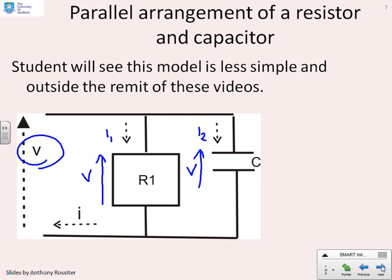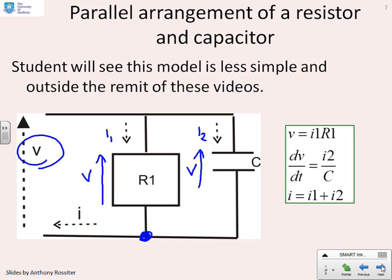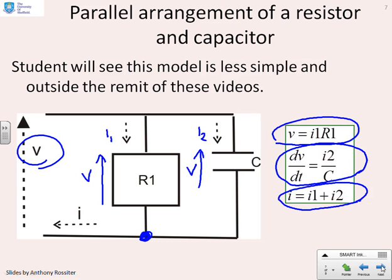What I can do now is look at each component in turn, and because these have got parallel arrangements, I'm going to need Kirchhoff's current law by summing the currents at a node. This is what we get then. The voltage across the resistor, I1 times R1. The voltage across the capacitor, and you'll see I've used the derivative form here, dV dt equals I2 over C. And finally, Kirchhoff's current law, I equals I1 plus I2. So if I put all this together, I'm going to end up with I equals V over R1 plus C dV dt.